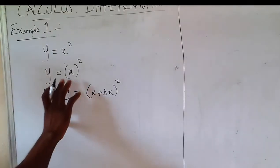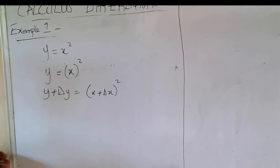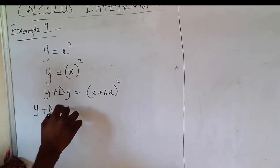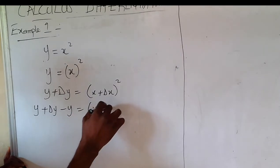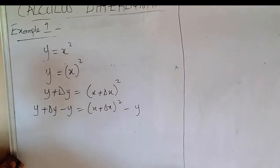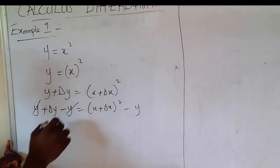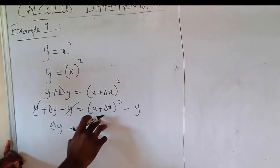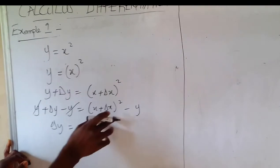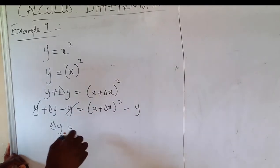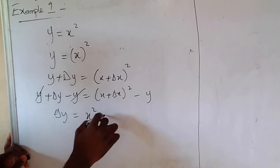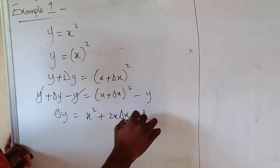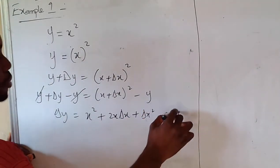That was the first step. Next, subtract y from both sides: y plus δy minus y equals x plus δx squared minus y. The y's cancel on the left. Now expanding x plus δx squared — you can expand normally or use Pascal's triangle — it becomes x squared plus 2x·δx plus δx squared, minus y.